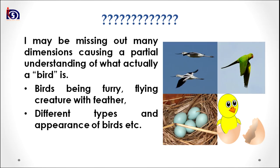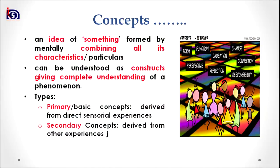For example, a bird is a furry, flying creature with feathers. It is not a mammal, and there are different types and appearances of birds as shown in the visual. A bird also lays eggs. Therefore, if we are not discussing all these dimensions and characteristics, we are not justifying the explanation of the concept. Therefore, a concept can be defined as an idea of something formed by mentally combining all its characteristics and particulars.